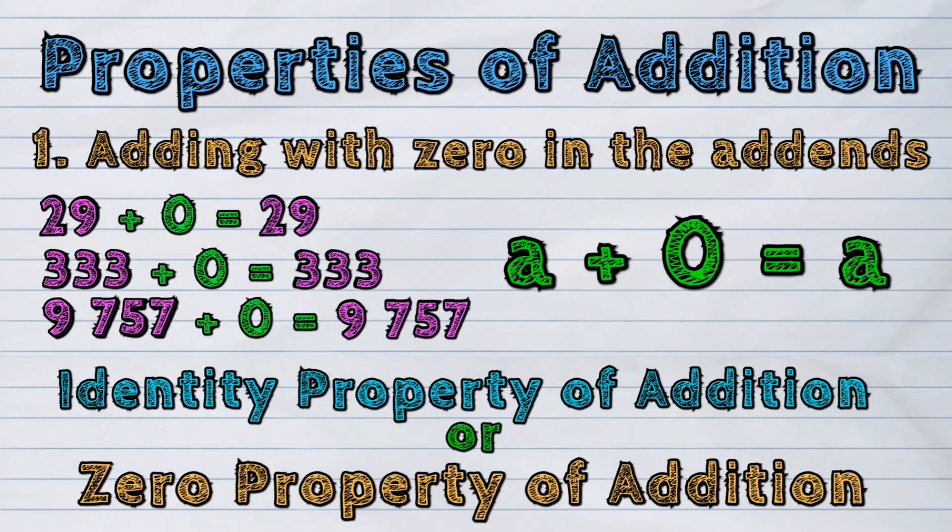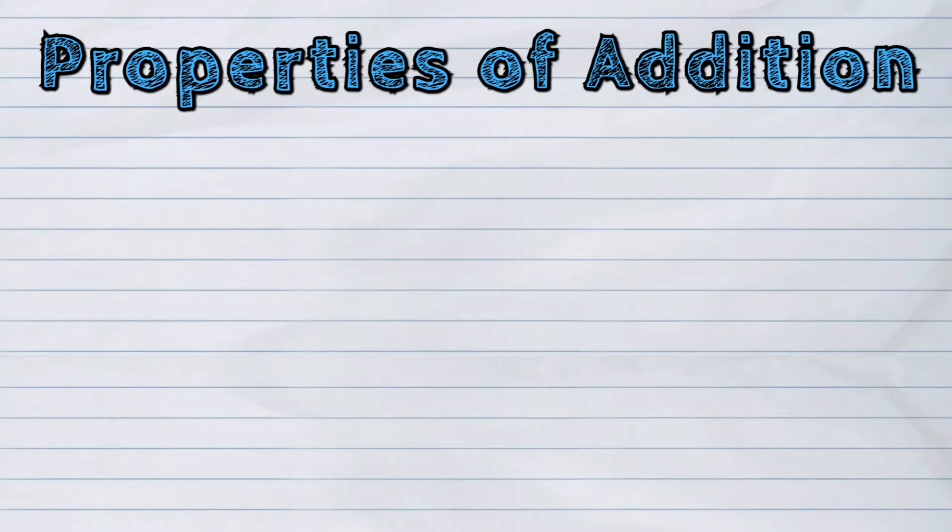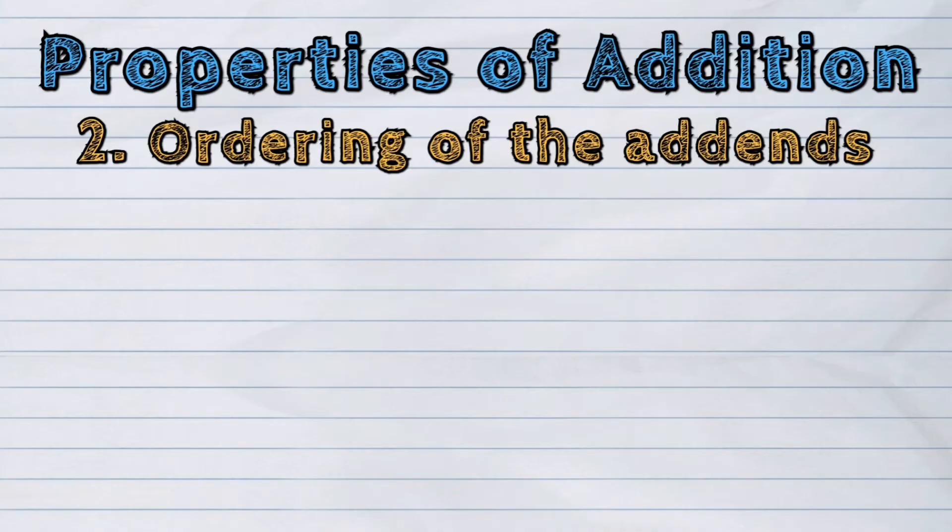It means any number added to zero gives the same number. The second property of addition is about ordering of the addends.